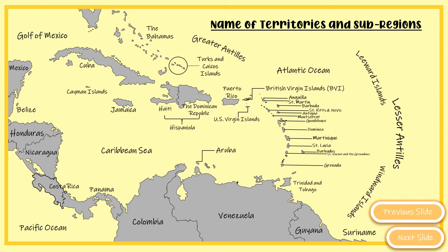Haiti is the first black Republic in the Western Hemisphere and gained independence in 1804. Puerto Rico is a freely associated state of the United States of America — you'll learn more about that in the political definition. The Cayman Islands is a British overseas territory, meaning it still depends on Britain, like Montserrat as well.